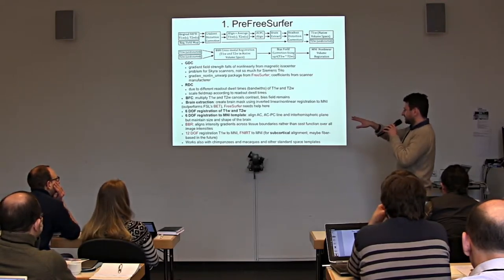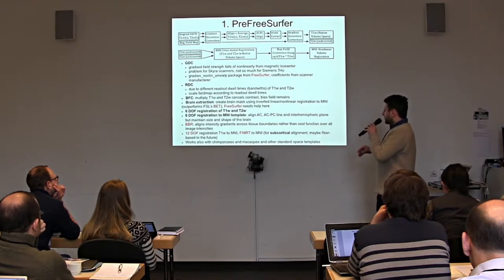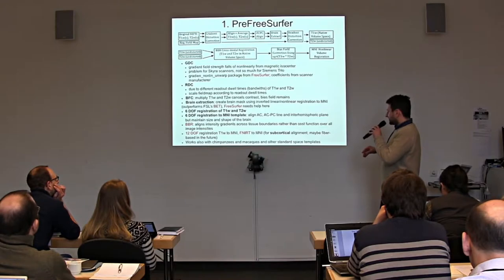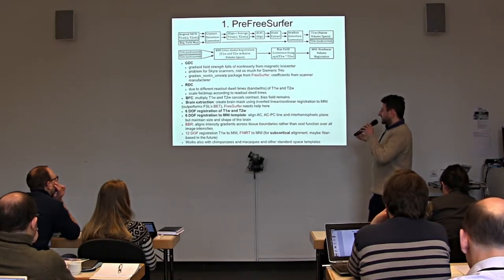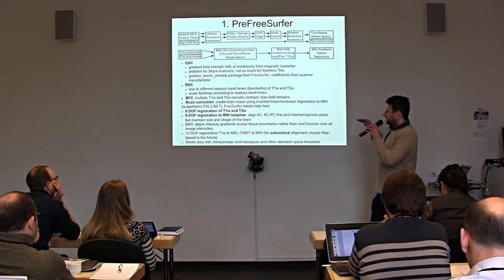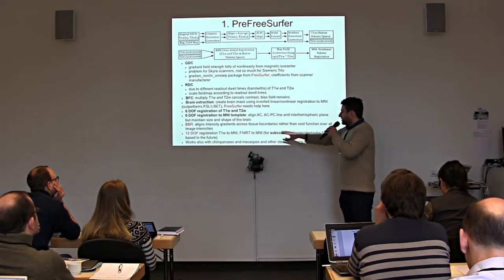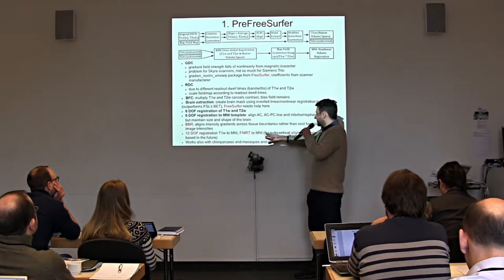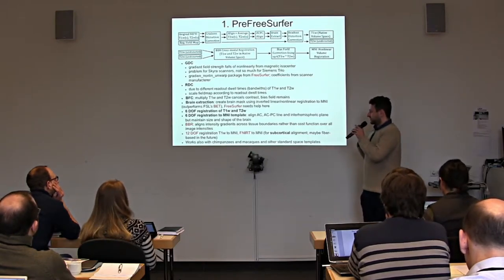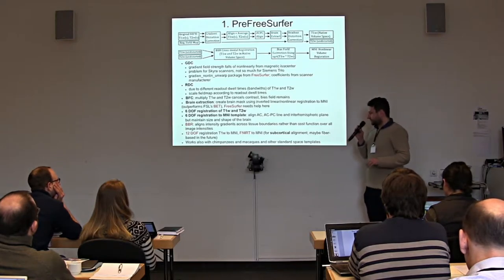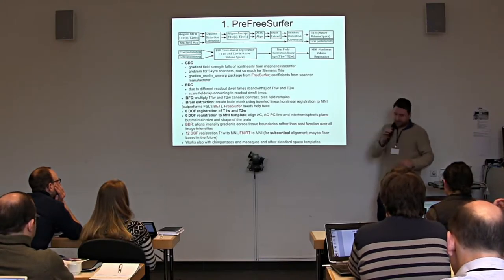We perform a six-degrees-of-freedom registration to MNI template to align anterior and posterior commissures and large fiber bundles connecting hemispheres. Boundary-based registration aligns intensity gradients — it is very good for cross-modal registration. A non-linear registration to MNI is done just for subcortical structures; for cortex, this non-linear registration works fine for subcortex but not cortex, so we don't use the result for the cortex. This can also be applied to data from other animals like chimpanzees and macaques.